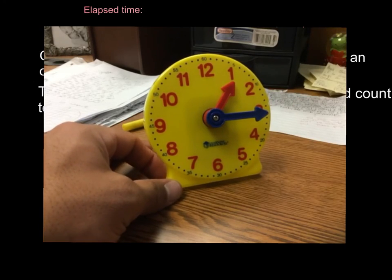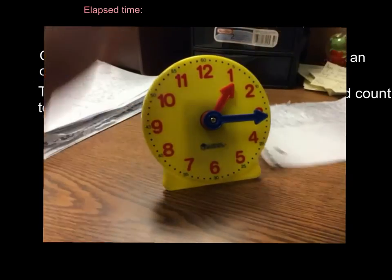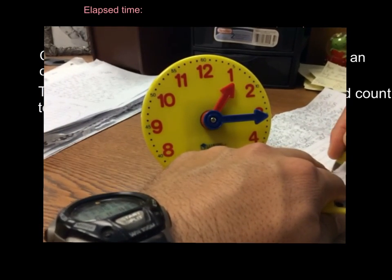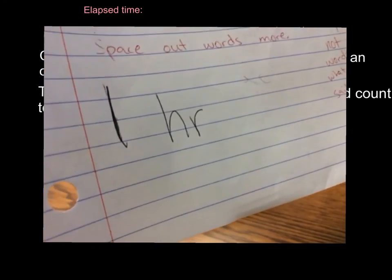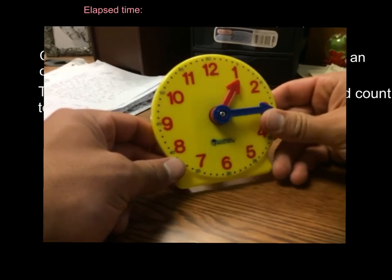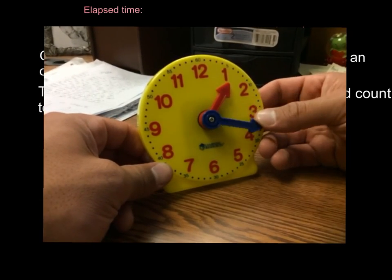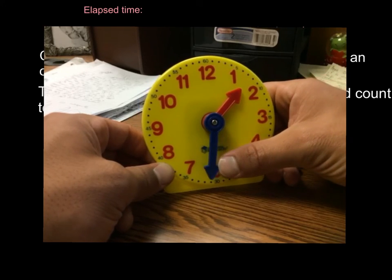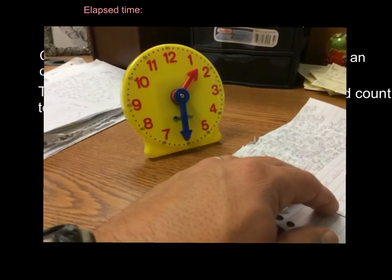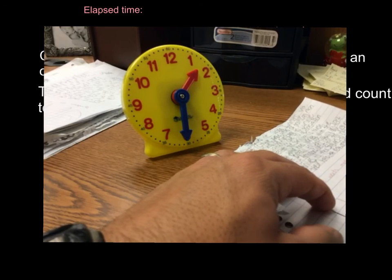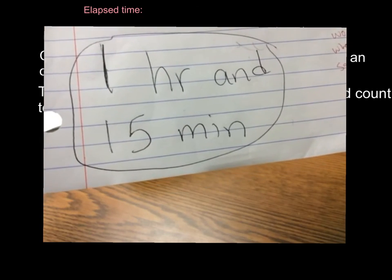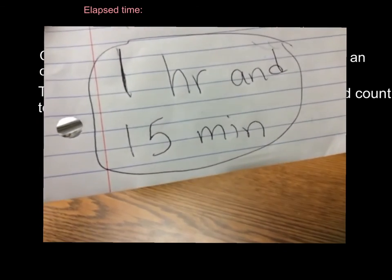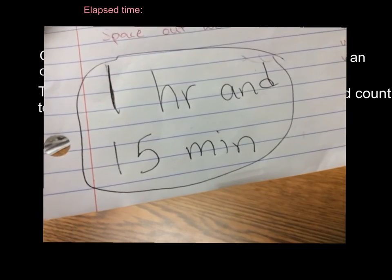But I'm not to my ending time. My ending time was 1:30. So I know I have gone already, I have gone one hour. I have gone one hour so far from 12:15 to 1:15, right? But I need to go to 1:30. So from here, I'm just going to count by minutes. So I'm going to go 5, 10, 15. So it took me 15 more minutes to get to 1:30. So my answer of elapsed time would look like this. 1 hour and 15 minutes is what it took for whatever event it was that started at 12:15 and ended at 1:30.